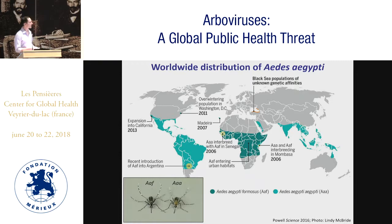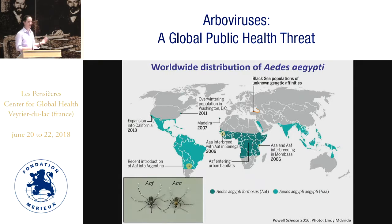Aedes aegypti is widely distributed throughout the tropics and subtropics, from the southern United States down to Argentina, in most of sub-Saharan Africa, and throughout Southeast Asia and the Pacific. The species consists of two subspecies originally described based on morphological and ecological differences, subsequently supported by modern genetic studies: Aedes aegypti formosus, the dark form, and Aedes aegypti aegypti, the light form. With just a few exceptions, formosus is exclusively found in sub-Saharan Africa, whereas aegypti is found throughout the rest of the world.